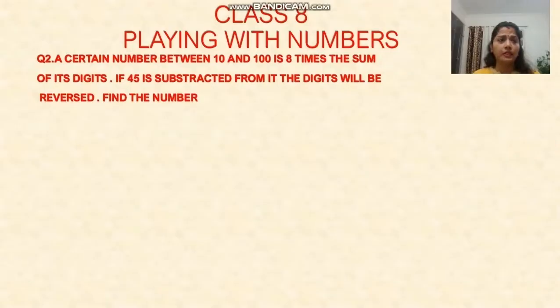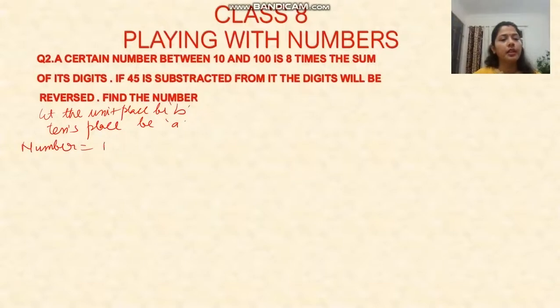Next question: A certain number between 10 and 100 is eight times the sum of its digits. The question is about a two-digit number between 10 and 100. Let the units place be b and the tens place be a.